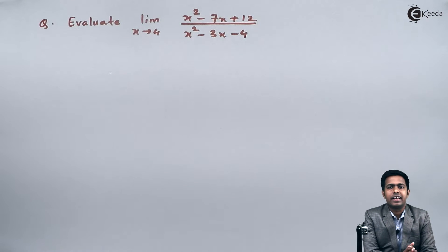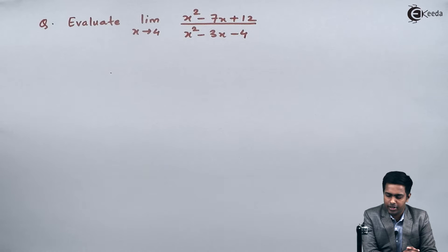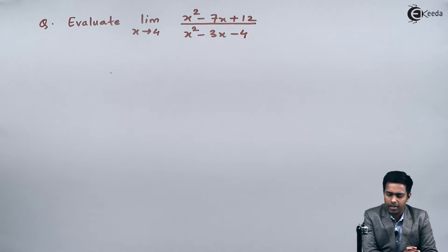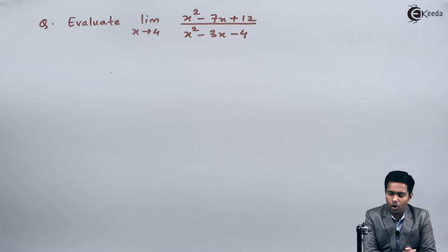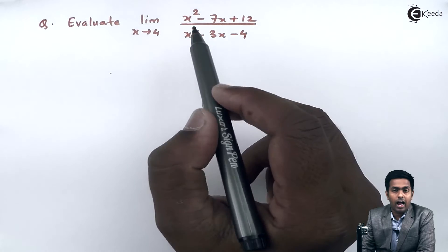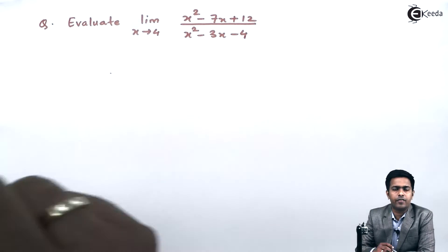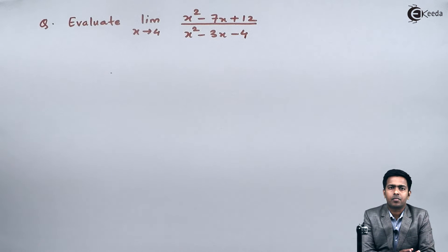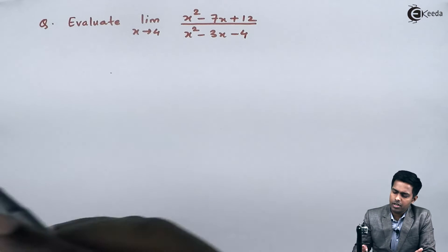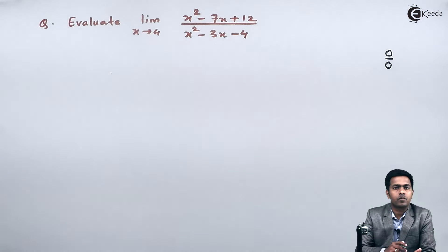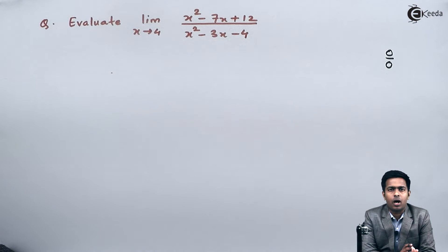Here in this problem we have to evaluate the limit as x tends to 4 of (x² - 7x + 12) divided by (x² - 3x - 4). Before solving, observe that there is an algebraic function given. Whenever we have an algebraic function we always start with the direct method, and if direct method fails — meaning it gives an indeterminate form 0/0 — then we apply other methods.